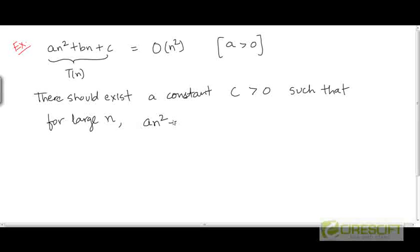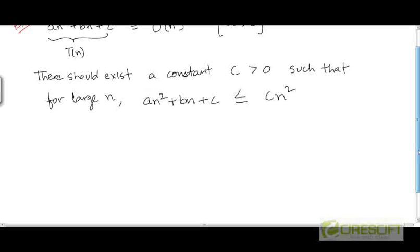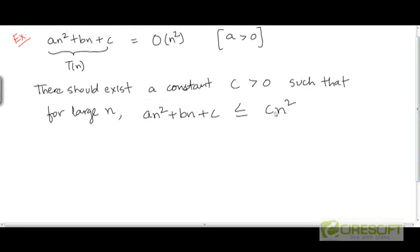T here is an² + bn + c, and this needs to be bounded from above by c times n². Actually, let me call this constant c1 because we also have this other constant called c.